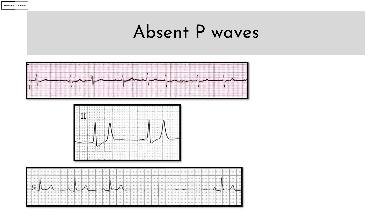Absent P wave occurs when there is no atrial depolarization. Since the P wave is absent, we have to depend on other findings in the ECG to diagnose the underlying condition. There are three important causes. If there is an irregularly irregular narrow complex tachycardia without any discrete P waves, consider AF — in AF, the atria only fibrillates and therefore there is no proper atrial depolarization.